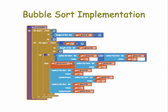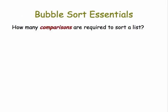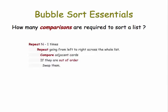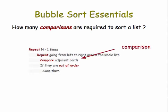Here's the implementation of bubble sort in App Inventor. But let's ignore those details and boil it down to just the question of how many comparisons does bubble sort need to sort a list? We'll look at this pseudocode version of the algorithm. We're going to repeat n minus 1 times, going from left to right across the whole list, comparing adjacent cards or numbers. If they're out of order, we swap them. The comparison comes when you are comparing adjacent cards.